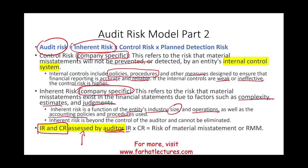Inherent Risk × Control Risk equals what we call the Risk of Material Misstatement, or RMM. So if you see the term RMM, that means Risk of Material Misstatement = Inherent Risk × Control Risk, both assessed by the auditor.